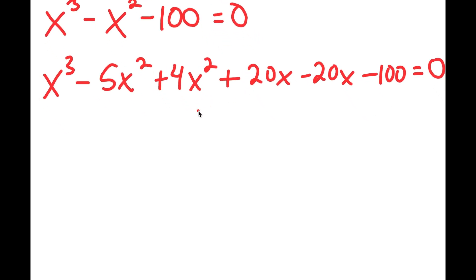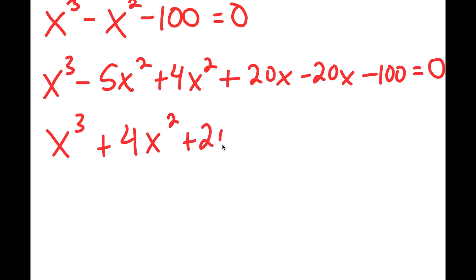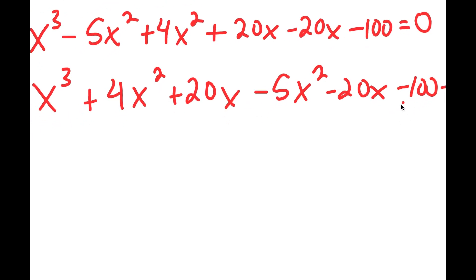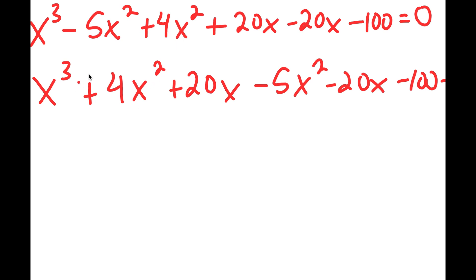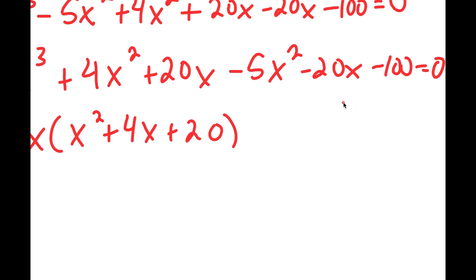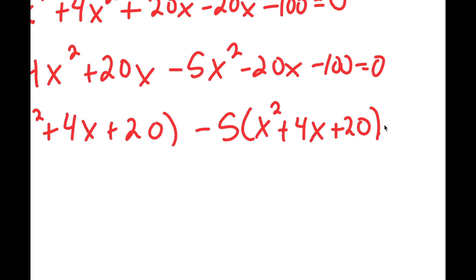Now I can reorder this and make it equal to x to the power of 3 plus 4x squared plus 20x, minus 5x squared minus 20x minus 100, equals 0. From x to the power of 3 plus 4x squared plus 20x, I can factor out x, getting x times x squared plus 4x plus 20. From negative 5x squared minus 20x minus 100, I can factor out negative 5, getting negative 5 times x squared plus 4x plus 20, which is equal to 0.